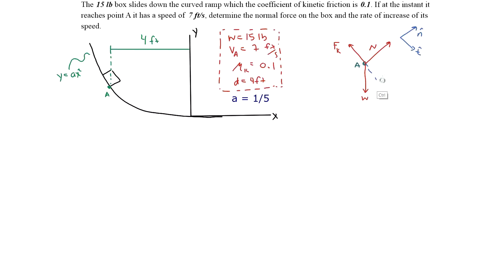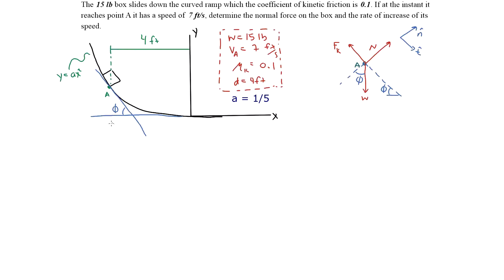If we draw the tangent to the surface, we can define this angle as phi. Knowing phi allows us to define the direction of the normal force. Going back to fundamental calculus, we can look at the tangent line to this point and, by continuing the x-axis, define angle phi in terms of dy/dx using the right triangle formed.